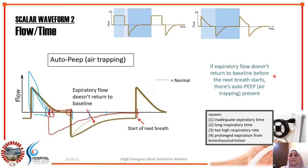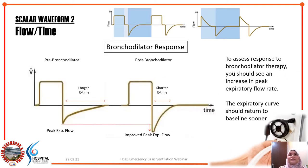You can also determine bronchodilator response from the flow-time curve. The expiratory limb reflects peak expiratory flow — the same as the PEFR you'd measure with a peak flow meter in acute asthma. To assess bronchodilator response, you should see an increase in peak expiratory flow rate — the vertical expiratory line will be longer — which is a good sign that the patient is responding to bronchodilator treatment.